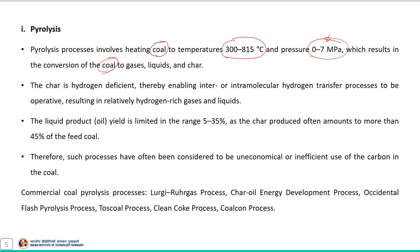The process results in higher hydrogen-rich gas and liquid as products, mainly due to inter- or intramolecular transfer of hydrogen. The liquid product — oil yield — is limited to a range of 5 to 35 percent, while char production is close to around 45 percent of the feed coal. Therefore, such processes are often considered uneconomical or inefficient use of carbon in the coal.